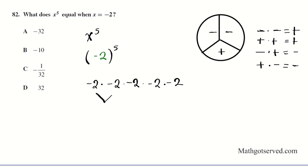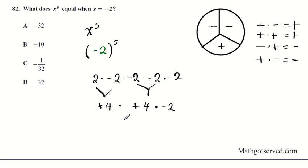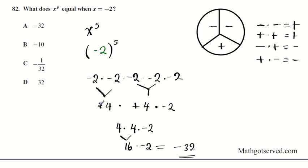Negative two times negative two — do the sign first, then the number. Negative times negative is positive, and two times two is four. So that gives positive four. Then negative two times negative two again: negative times negative is positive, two times two is four. We bring down the remaining negative two. So we can write this as four times four times negative two. Four times four is sixteen. Sixteen times negative two — signs are different, so the answer is negative — negative thirty-two.